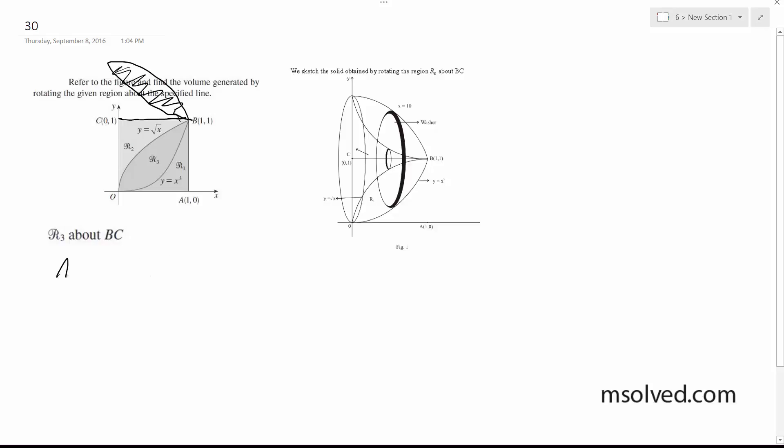So setting it up initially, it's going to be pi times 1 minus x cubed squared minus 1 minus square root of x squared. Pi is equal to 1 minus x cubed squared minus 1 minus square root of x squared equals pi times 1 plus x to the sixth minus 2x to the third minus 1 minus x plus 2 root of x.